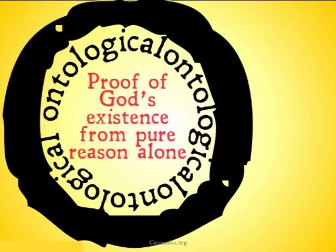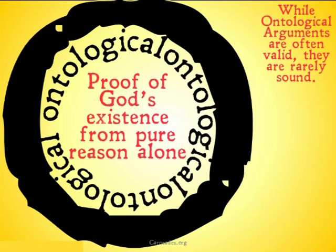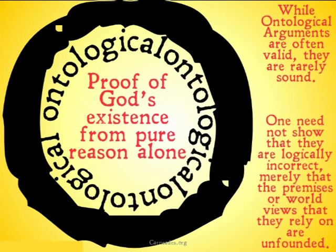The ontological argument is a proof of God's existence from pure reason alone, and that is the basic problem with all the ontological arguments. While the ontological arguments are often quite valid, they're rarely sound. One need not show that they're logically incorrect, merely that the premises or the worldviews that they rely on are unfounded. Perhaps they're not unsound, but the premises are not as powerfully substantiated or justified as the proponents of these arguments would like you to think. The key is to go in and question those premises and see on what points they rely.